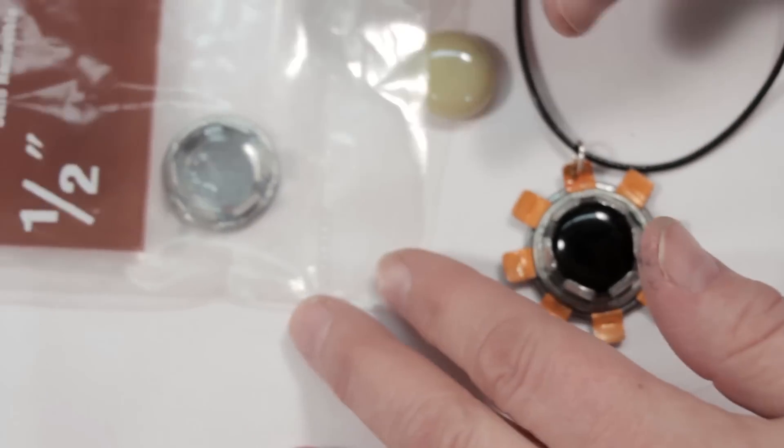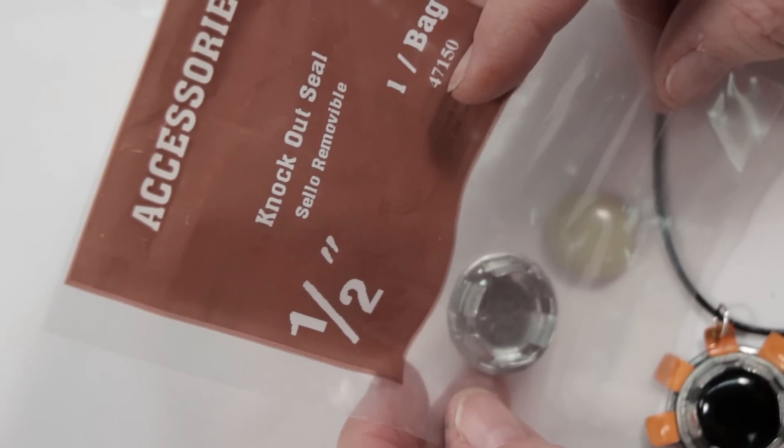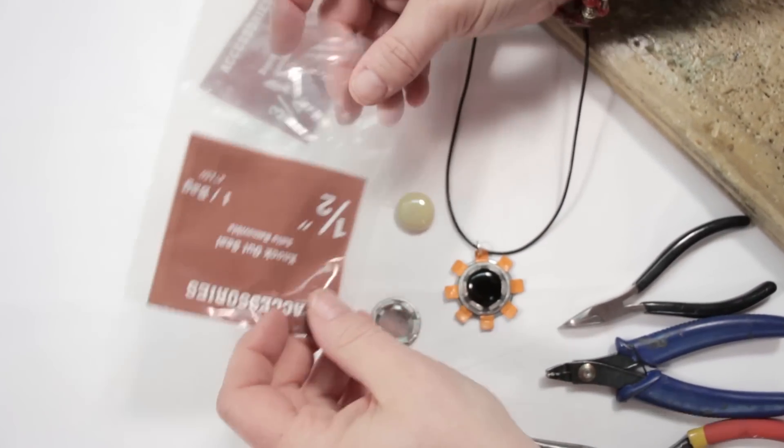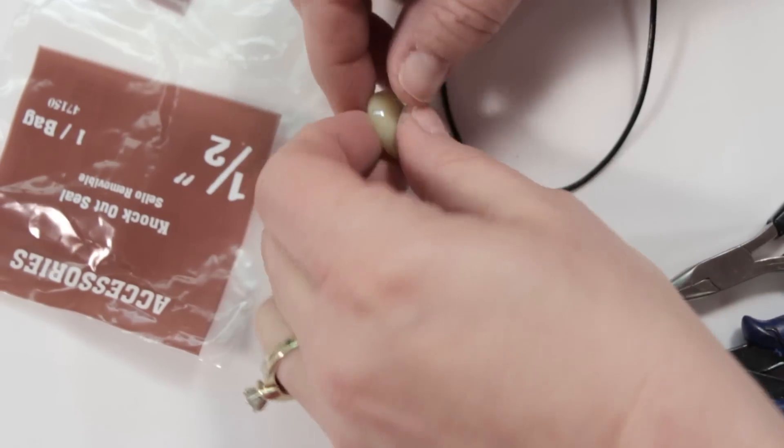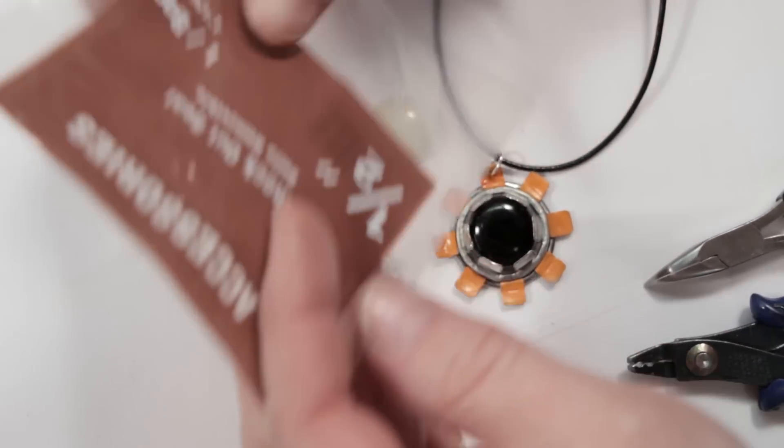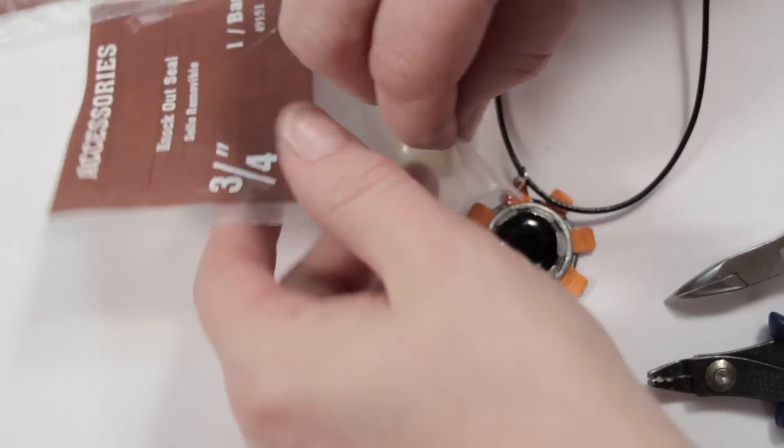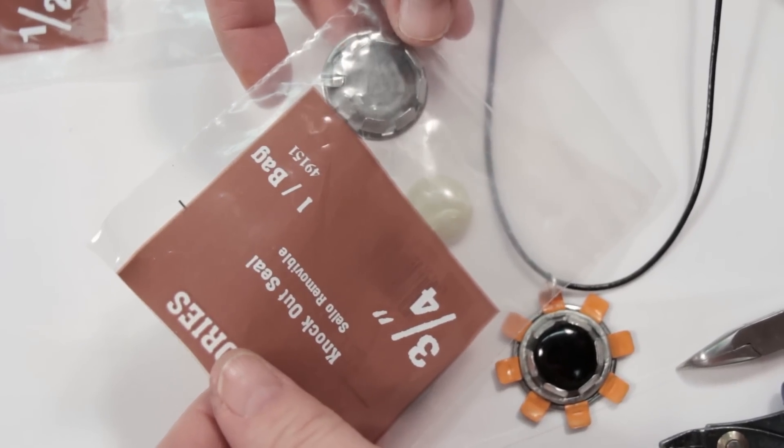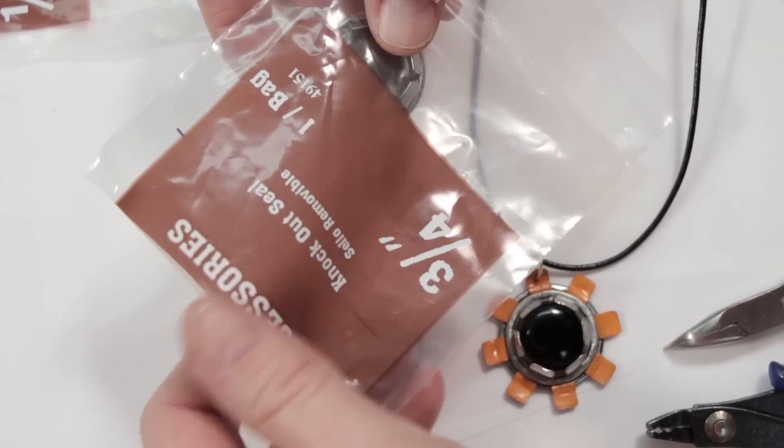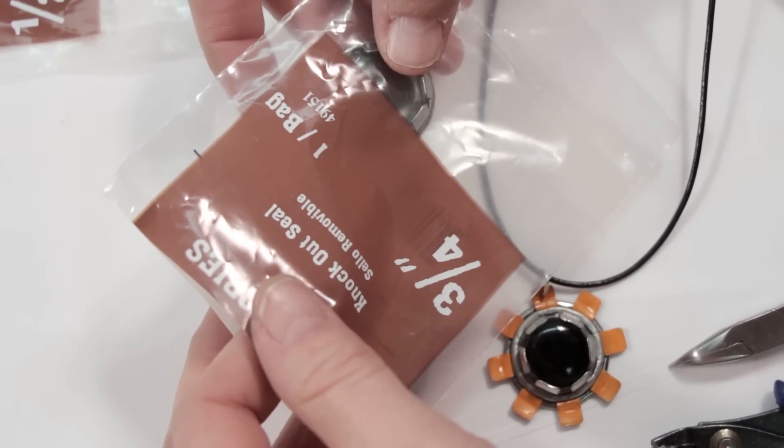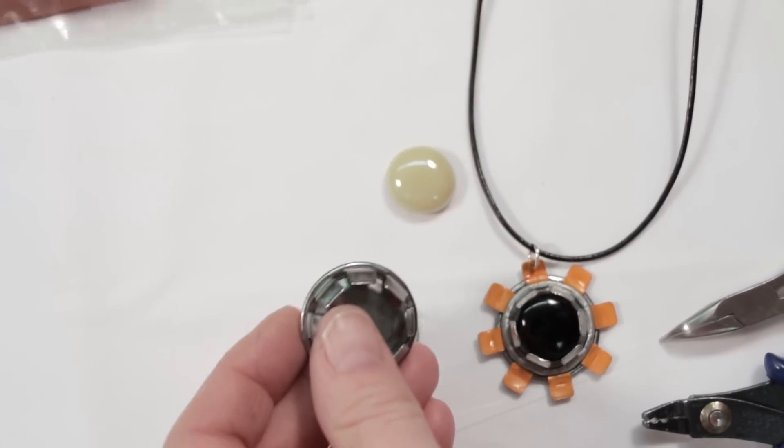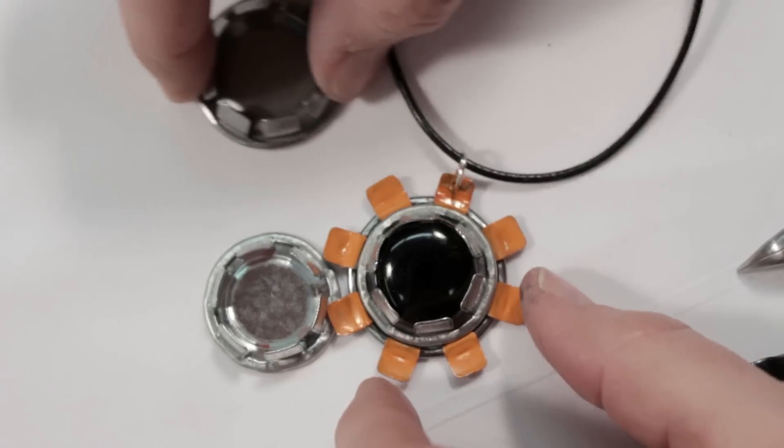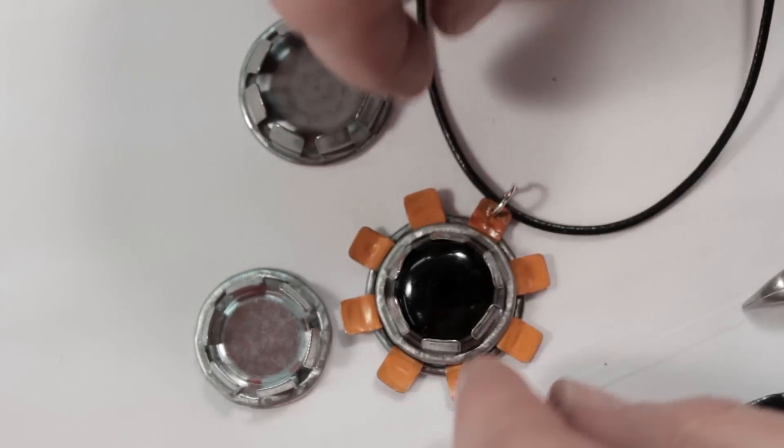We're going to begin by taking a half inch knockout seal and we're going to use that for the bezel around a glass pebble. Now bring out our three-quarter inch knockout seal. You can get this at most any hardware store and they're very inexpensive, under a dollar. We'll take out our three-quarter inch knockout seal. We're going to use the half inch for the bezel and the three-quarter inch for the base around the bezel.